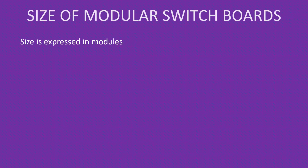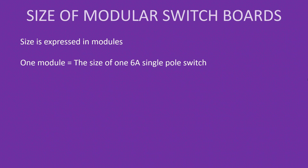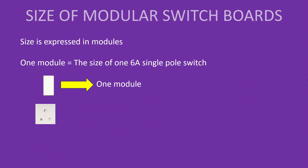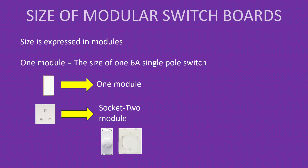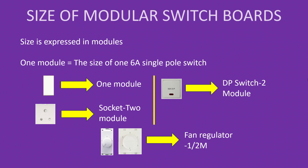If you look at modular switchboards as per IS or Indian standard, the size is expressed in modules. One module is the size of a 6 ampere single pole switch. Two modules means the size of two 6 ampere single pole switches together. A socket is bigger than a switch — the socket is two module. Fan regulators are available either in one module or two module. DP switches or double pole switches are also two module, equal in size to two 6 ampere single pole switches. DP switches being two module should be known by heart.